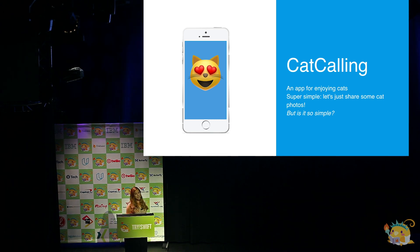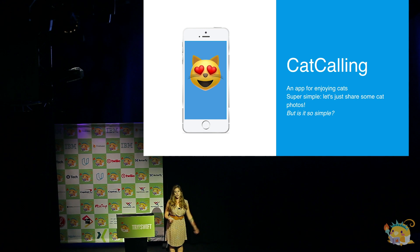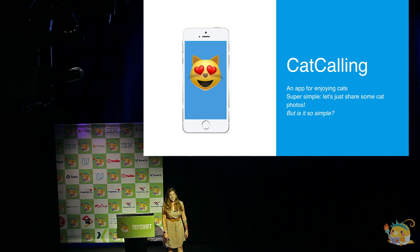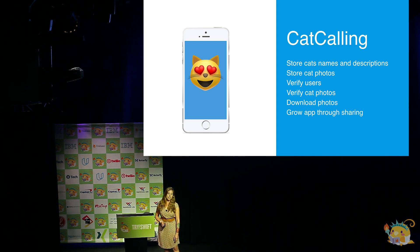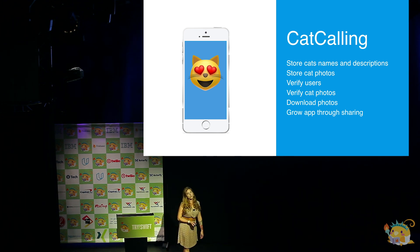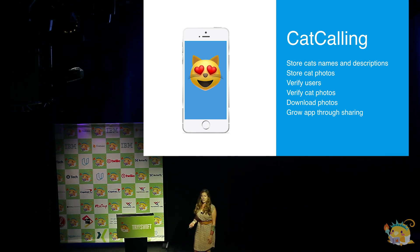Now, it's just an app for enjoying cats, right? That's pretty simple. But is it so simple? Of course not — that's why I'm here giving a talk about it. There are a lot of things to consider. First of all, you need a place just to store those cats' names and descriptions — namely, a database. But you're also going to need to store larger items like cat photos. No problem. I know I can do that using Firebase as well.